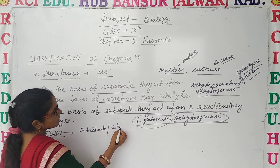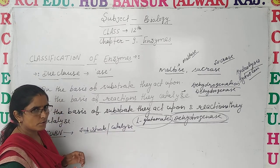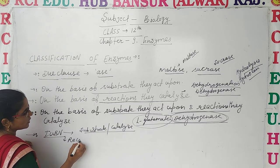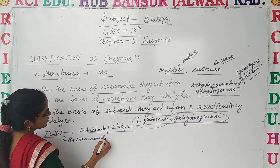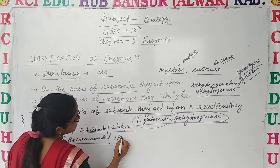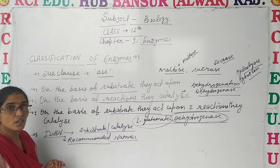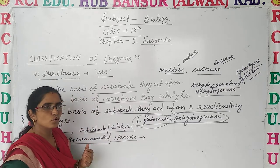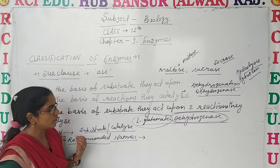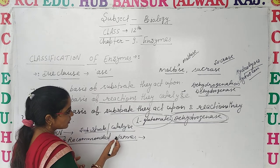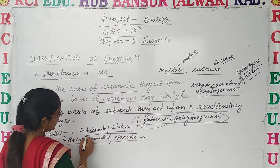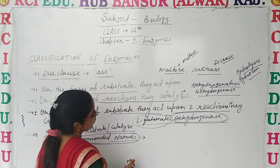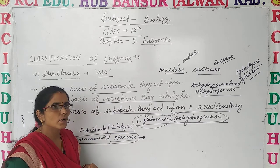These are called recommended names. Some enzyme names are very difficult and very lengthy, so it is difficult to remember them. Therefore, the IUB has decided to provide short names for these enzymes which can be easily learned and remembered.